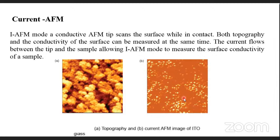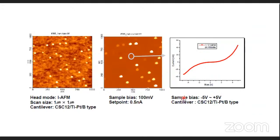From current AFM, you can get a current-voltage IV graph from a specific point on the sample, which can be used for various electrical analyses. A CNT strand placed between electrodes was imaged and the single CNT's conductivity was measured by plotting sample bias versus current — demonstrating the capability of AFM for nanoscale electrical measurements.